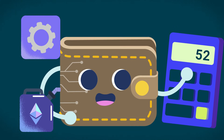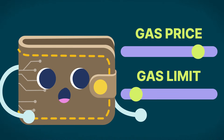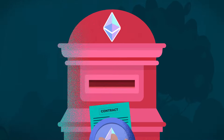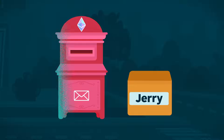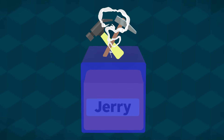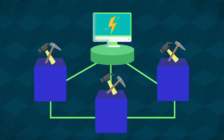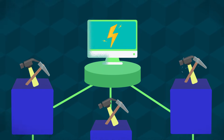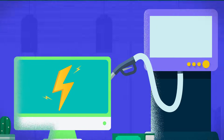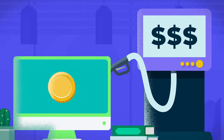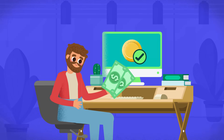Wallets typically do this for you automatically, but settings can be customized for advanced users. When you send a transaction or interact with a smart contract, you're asking the network to perform computational work on your behalf. This work consumes real computational power and energy from the computers or nodes that run the Ethereum network. Gas fees compensate the network participants who run these nodes for the resources they use to process and validate your transactions.